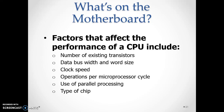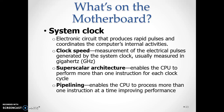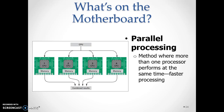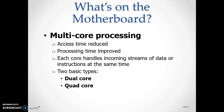Parallel processing inamaanisha kuwa na CPU zaidi ya moja. Hii inasaidia kufanya processing kwa urahisi zaidi kwa sababu itakuwa faster — access time itapungua na processing time itaboreshwa. Tukitumia parallel processing, access time itapunguzwa na kazi itafanywa kwa ufanisi zaidi.